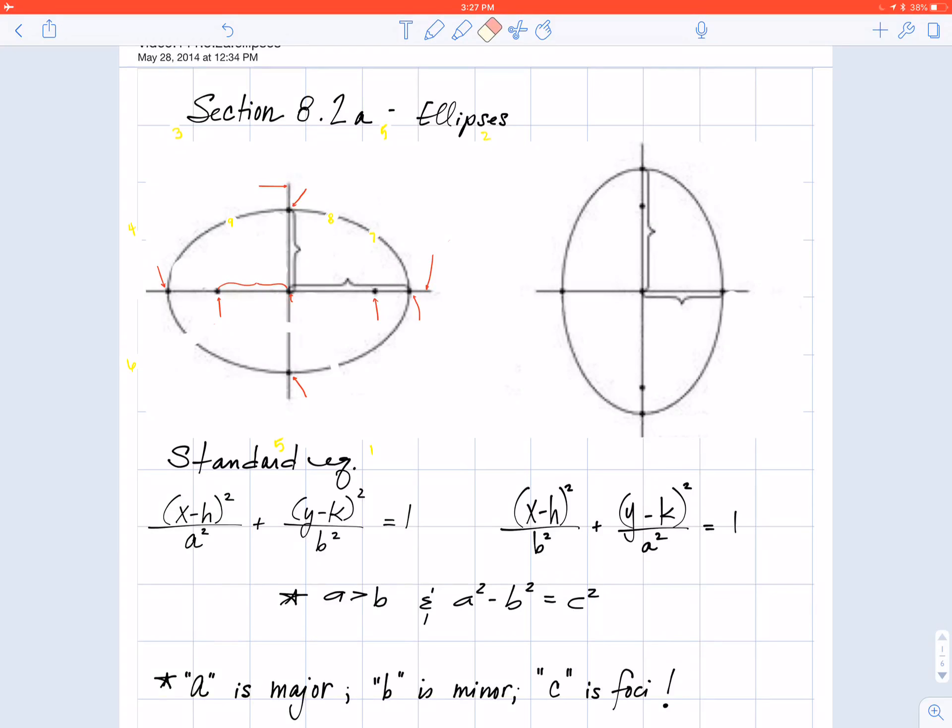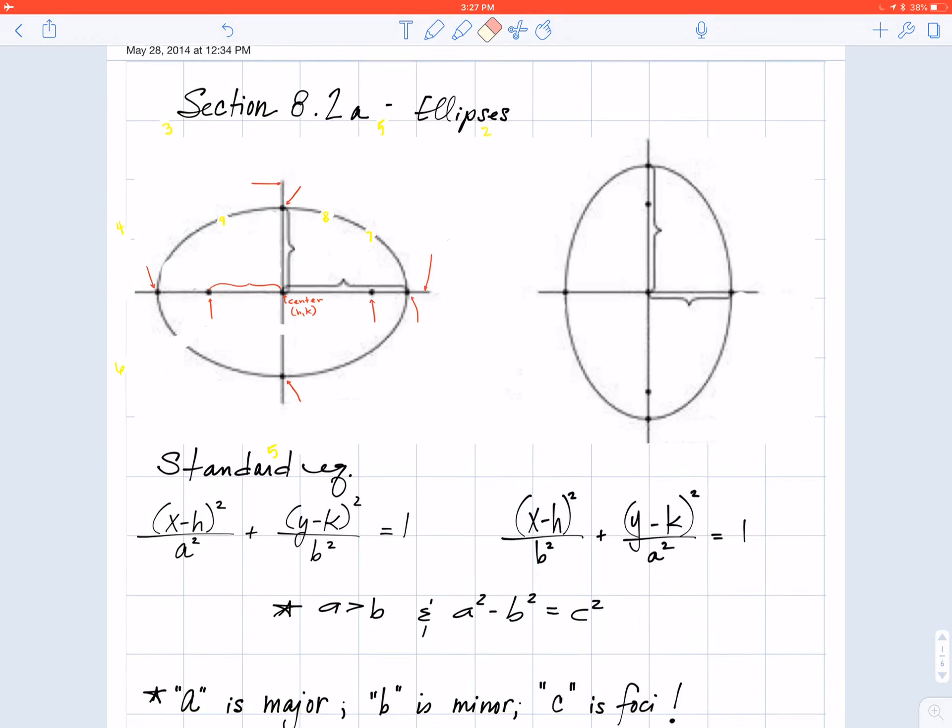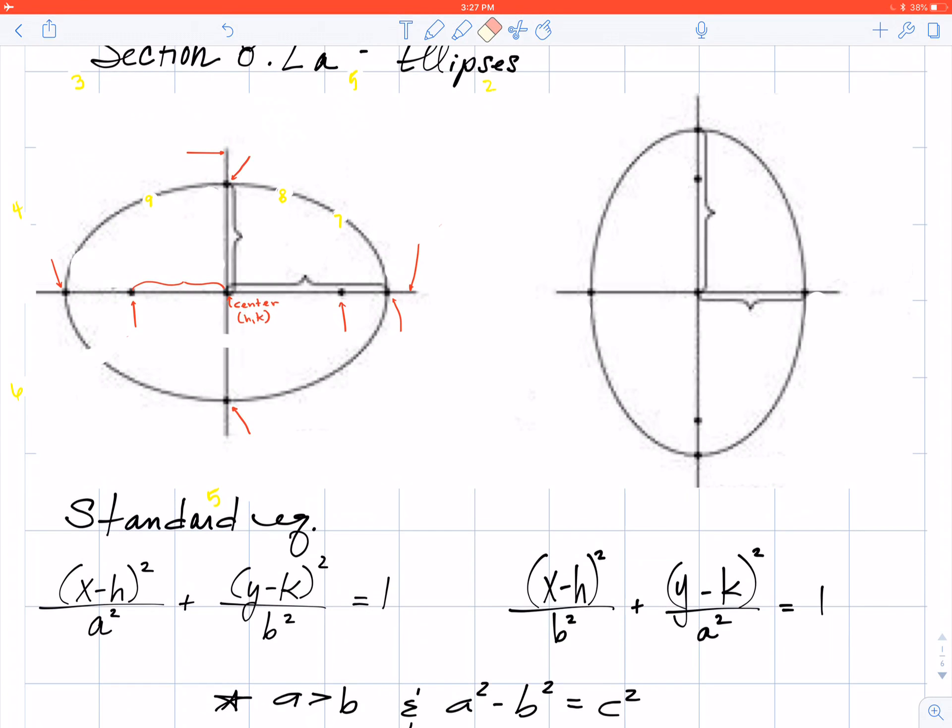So starting out, the very first thing that we have is the center of the ellipse. This is not such a big surprise since our circle had a center, our parabola did not have a center but it did have the vertex. All of those have that important coordinate of h,k.